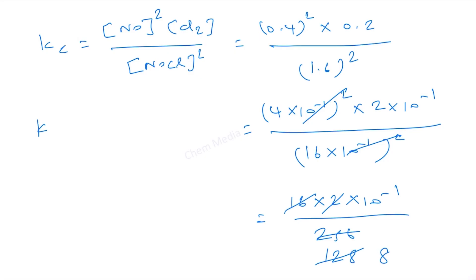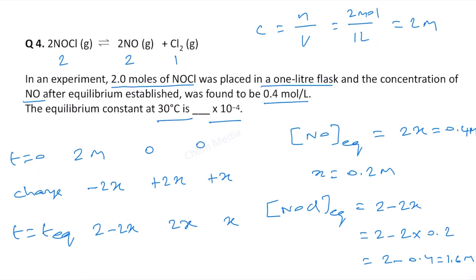So therefore Kc in this case is equal to 1 by 8 times 10 to the power minus 1. So 1 by 8 we need to figure out: 0.1 times 8 will be 8 remaining 2, 2 times 8 will be 16 remaining 4, 5 times 8 will be 40 and therefore what we have here is 0.0125.